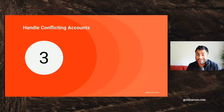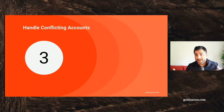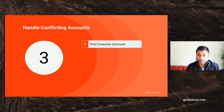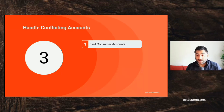Let me show you how you can deal with this specific scenario when on one side you have Google Cloud Directory Sync in place and on the other side you have consumer or conflicting accounts. Number one, you should find consumer accounts. I have a dedicated video on how to find consumer accounts — I'll put that in the description below, so please do check that out. It will give you a list of all the consumer accounts.